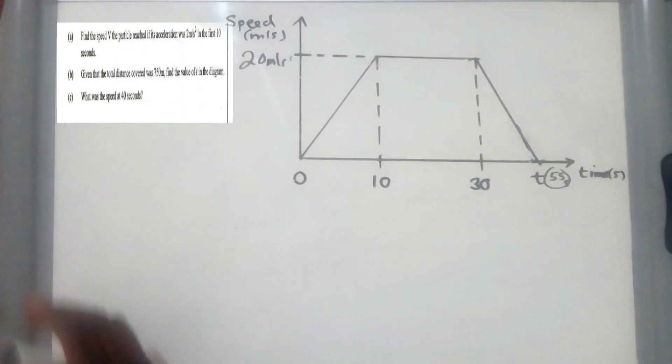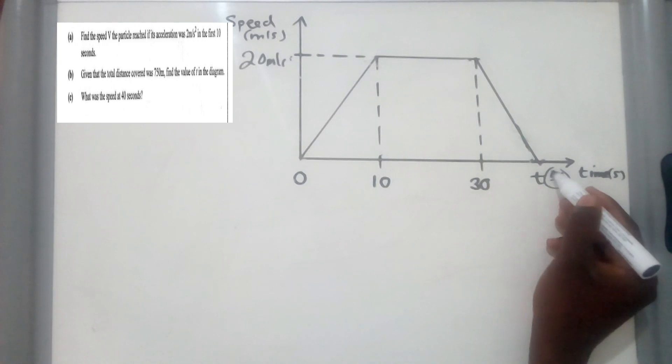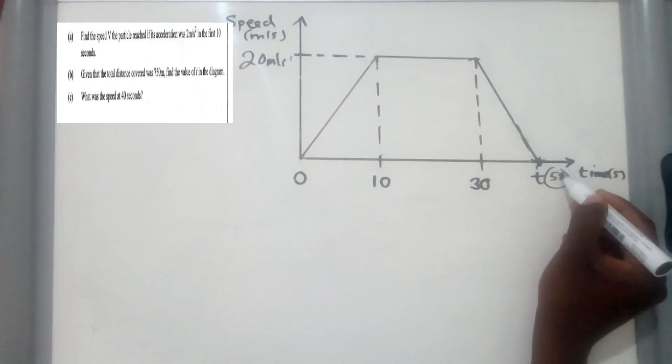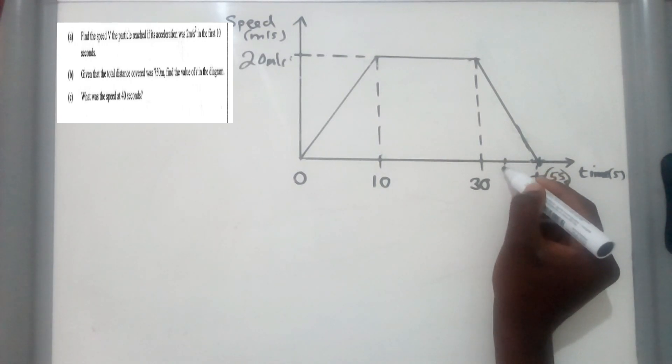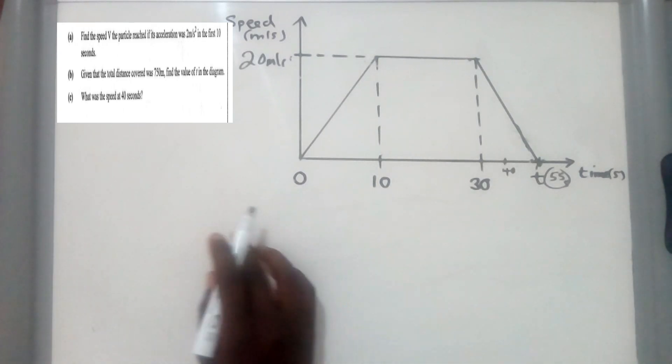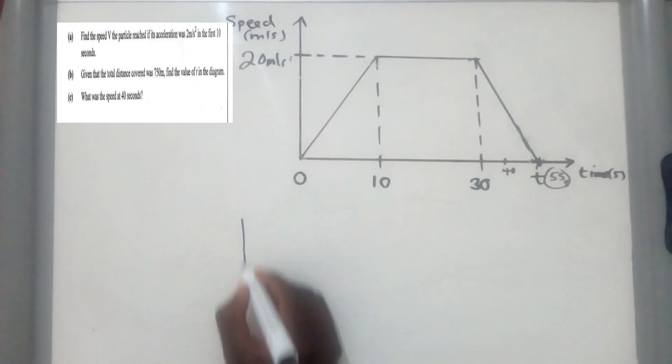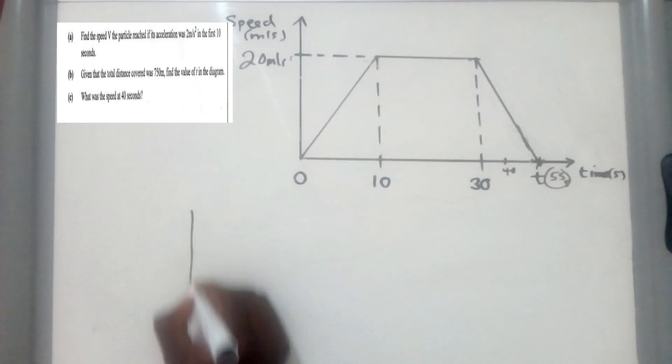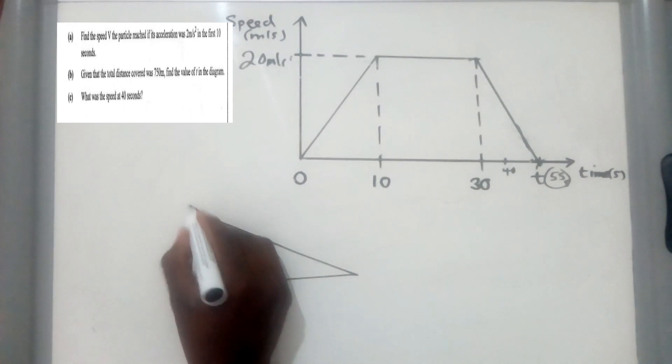So our question c here, they say what was the speed at 40 seconds. So we know from here to here, it's a 55. This is 30 and this is 55 over here. We just found 55. So 40 must be somewhere here. This is where 40 is. So to do this kind of a question, we do this, you just get the shape that you've been given. Let me write it here nicely so that you're able to see what will be happening.